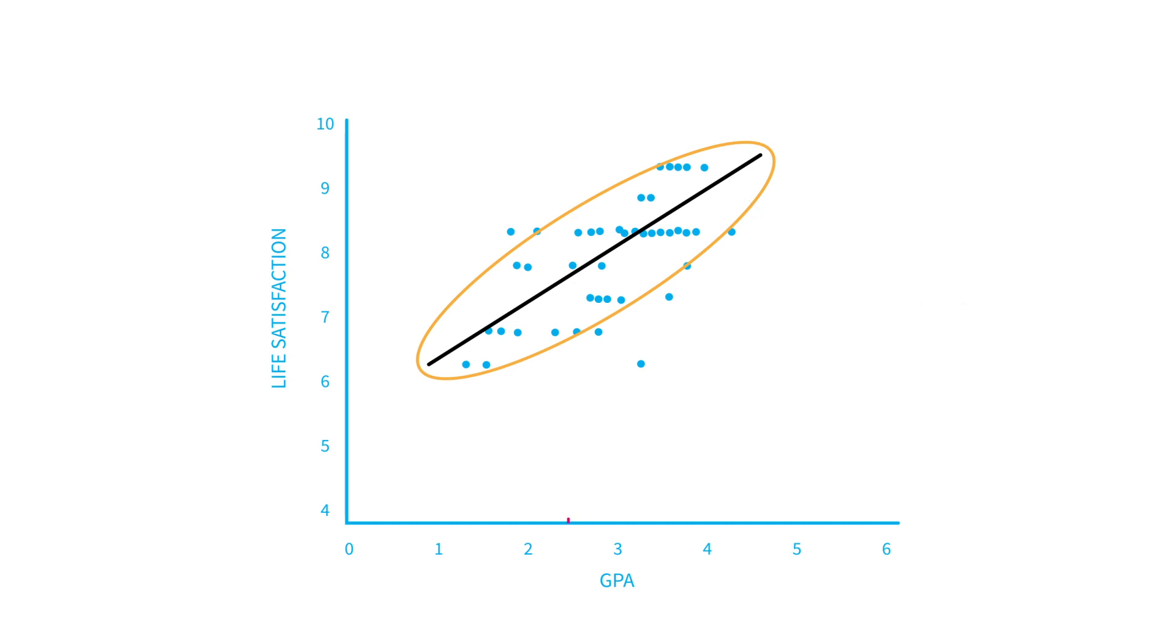From this model, we can predict that someone who had a grade point average of 2.5 would approximate a life satisfaction score of 7.6 out of 10. This is around 0.8 lower on average than someone with a GPA of 3.5 whose life satisfaction score would be around 8.4.